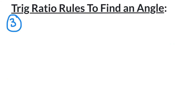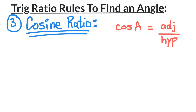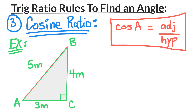The last rule is the cosine ratio. The cosine of an angle equals the adjacent side divided by the hypotenuse. Let's look at this example to find cosine A.